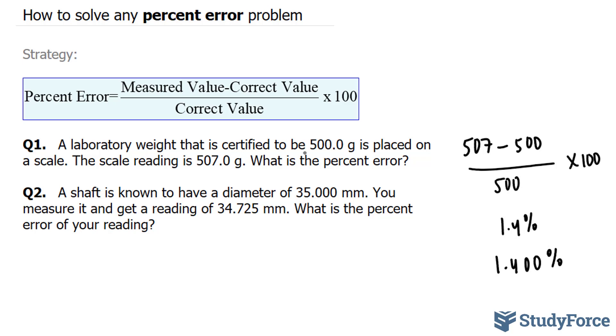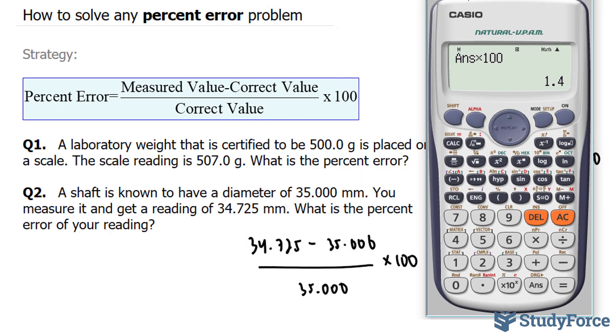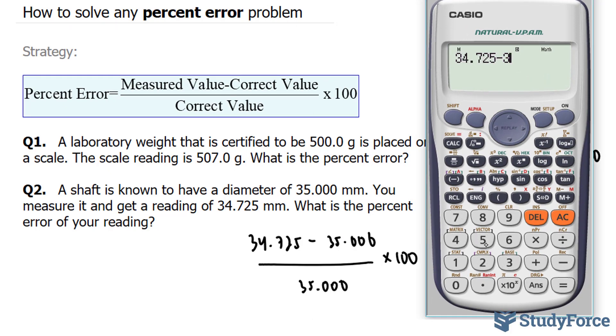We'll take our measured value of 34.725 and subtract it from 35. And of course, divide it by that, multiply it by 100. And this should give us our percentage. We have 34.725 minus 35.000 divided by 35.000. And of course, we multiply this by 100 where we end up with negative 0.78571.